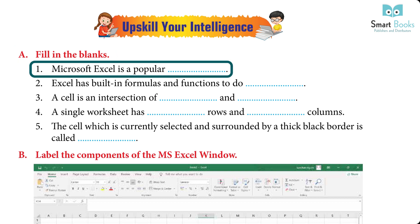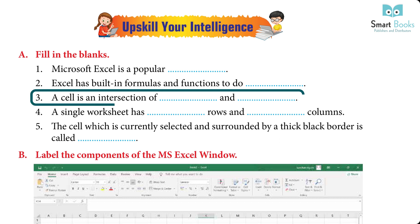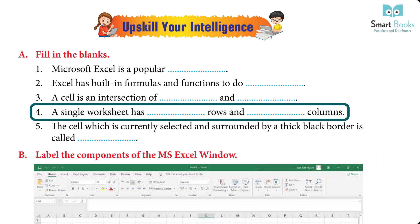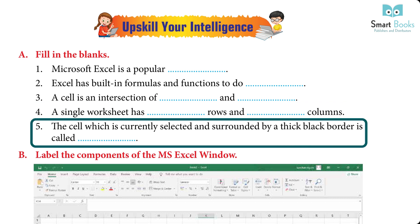Fill in the blanks: 1. Microsoft Excel is a popular — Answer: spreadsheet. 2. Excel has built-in formulas and functions to do — Answer: calculations. 3. A cell is an intersection of — and — Answer: rows and columns. 4. A single worksheet has — rows and columns — Answer: 1,48,576 rows and 16,384 columns. 5. The cell currently selected and surrounded by a thick black border is called — Answer: active cell.